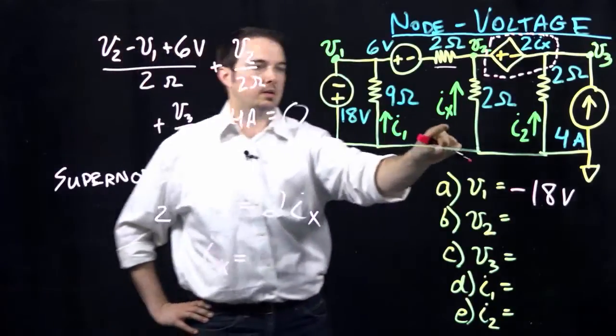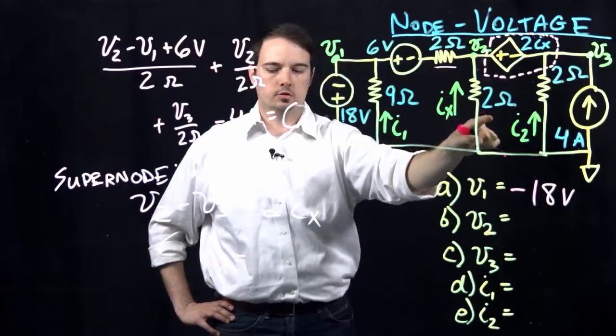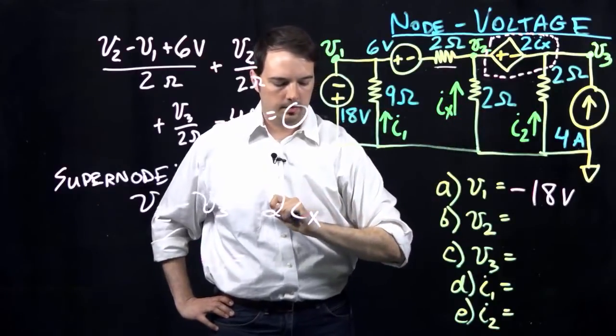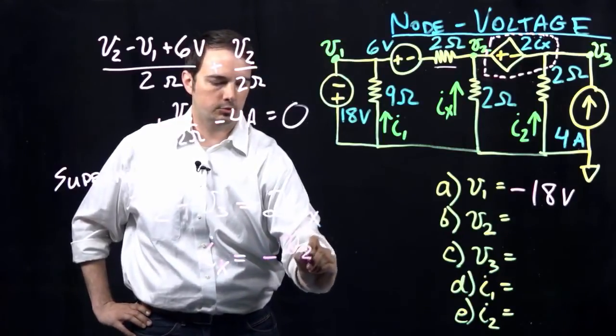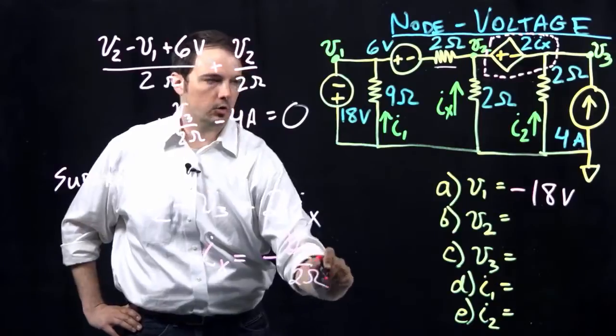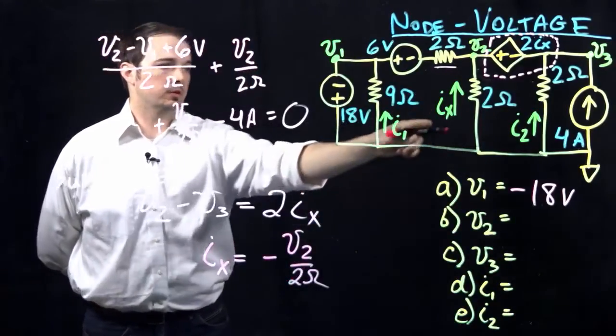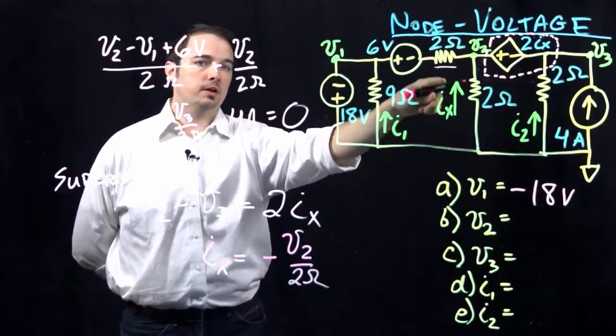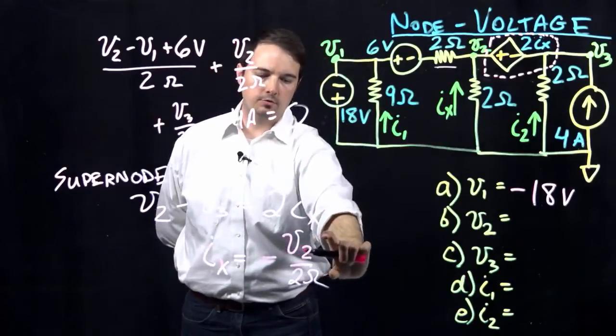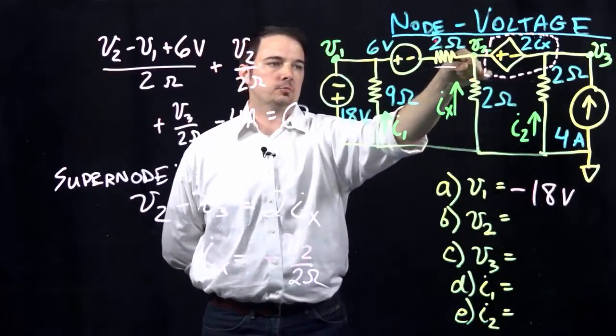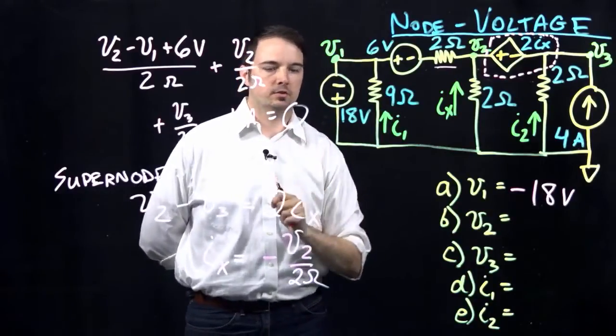So IX, again, indicated here in this problem as being the current that's traveling up through this 2 ohm resistor. So here we could say that IX is going to be equal to minus V2 over this 2 ohm resistor. And again, I'm indicating it as a negative quantity because specifically the direction of IX that's defined for us, in order to find that is pointed in the upward direction, but this value V2 over 2 would actually be the current defined as going in the opposite direction. So we need to put that negative sign to compensate that difference there.